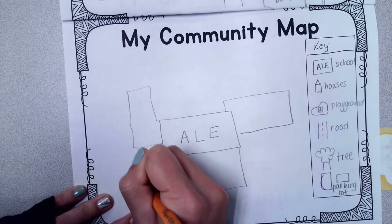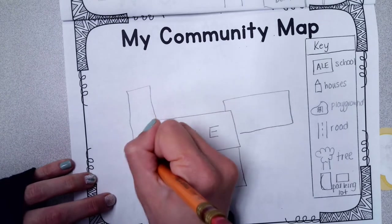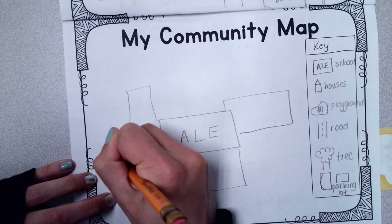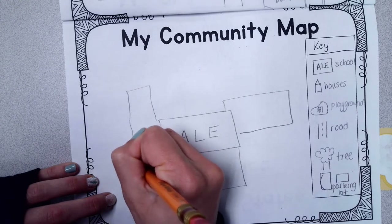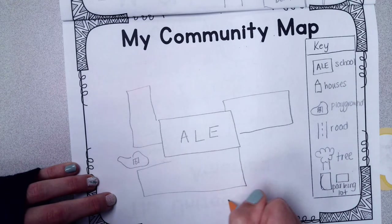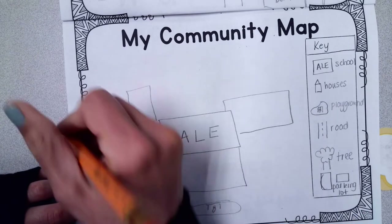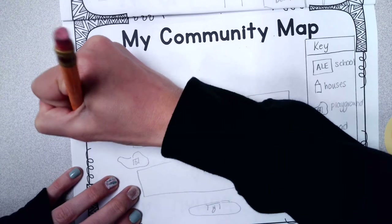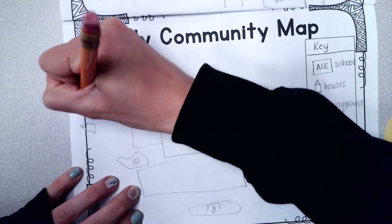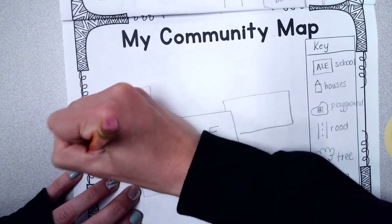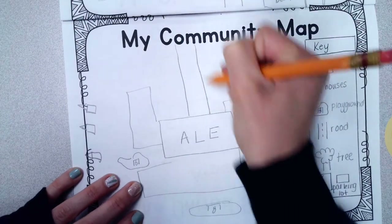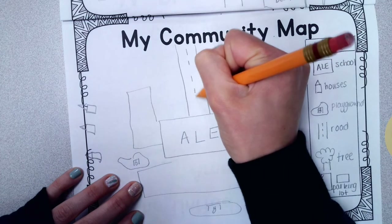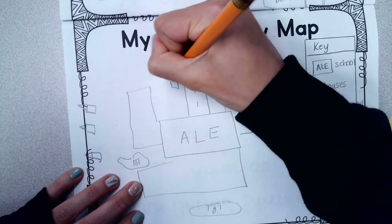I don't know where to draw it exactly, but the playground that we play on is over in this area — and then 'playground.' There's another one over here. We may not even have room to do the houses, but we could put the houses over here. This is where you live, Thomas. If we put a road going this way, there are more roads and more houses.